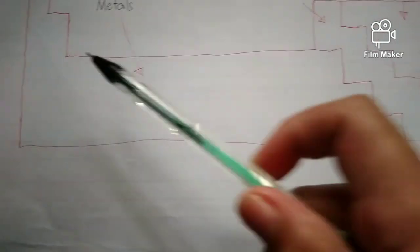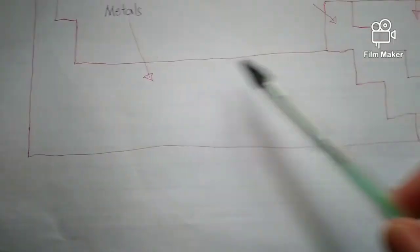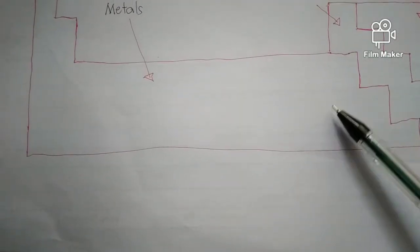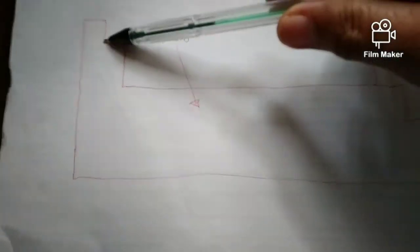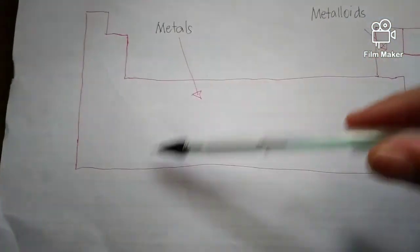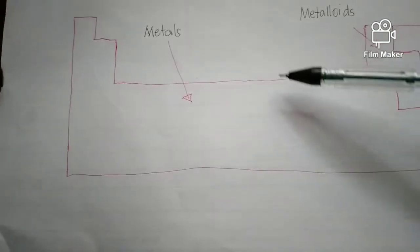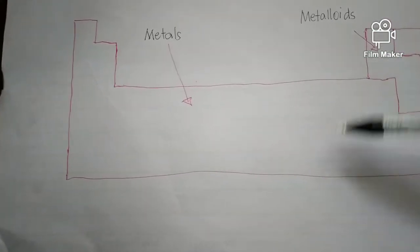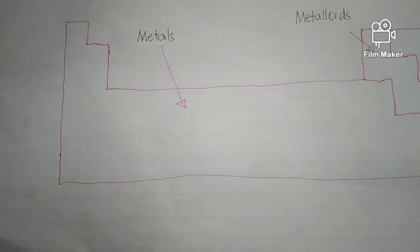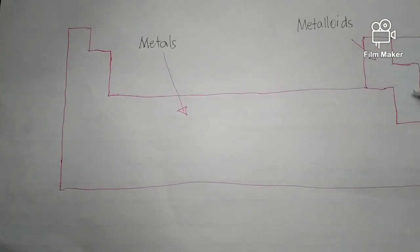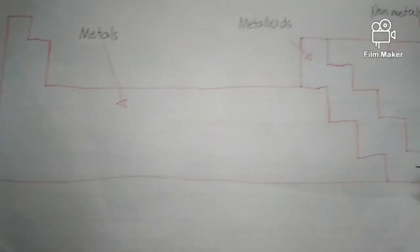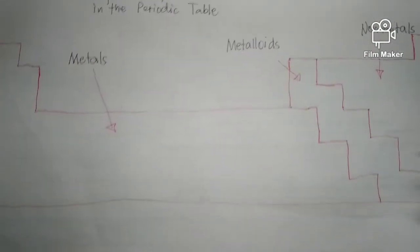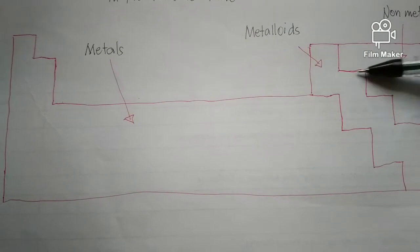So all of these elements here up to here are the metals. The most metallic is in the first line, and the metallic properties gradually decrease as you go up until you reach the metalloids, which are semi-metals.